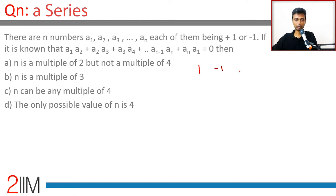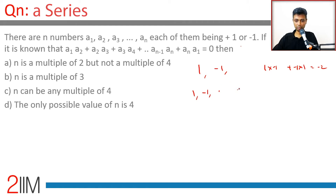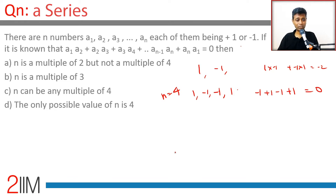For n=2 with values 1 and -1: the product 1·(-1) + (-1)·1 = -2, which doesn't work. For n=4 with values 1, -1, -1, 1: the expression gives -1 + 1 - 1 + 1 = 0, so n=4 works. n=2 does not work. A multiple of 2 but not a multiple of 4 doesn't work. The only confirmed possible value so far is n=4.